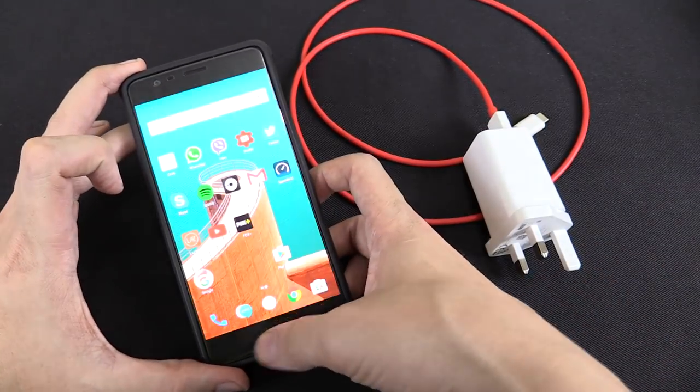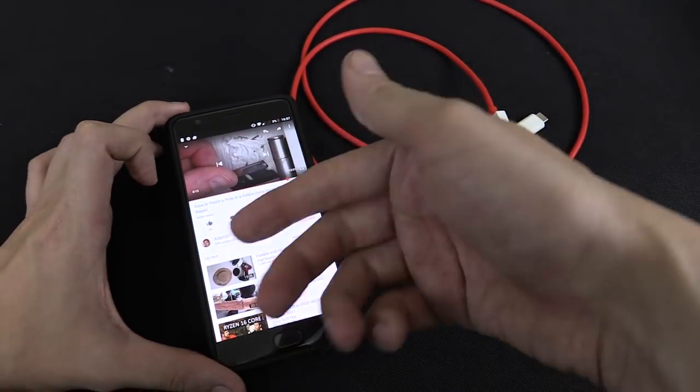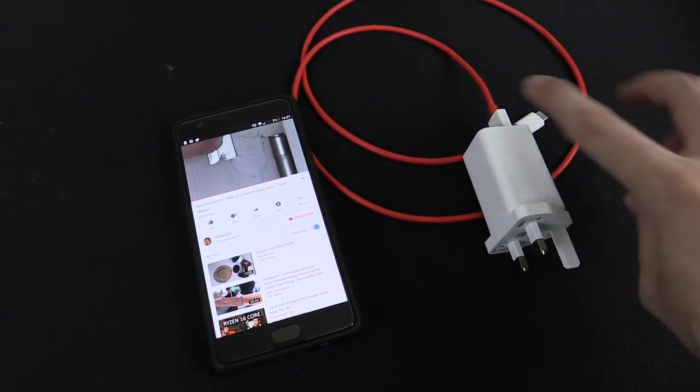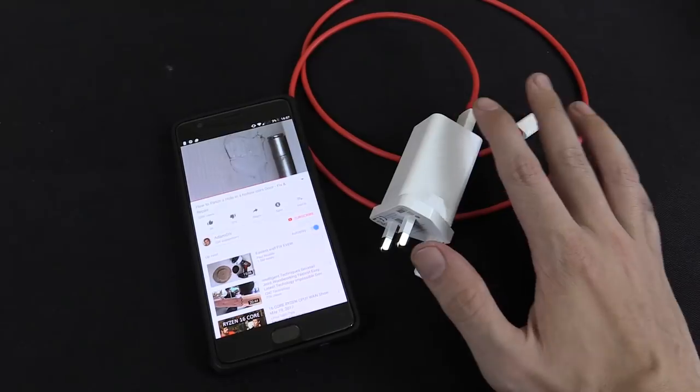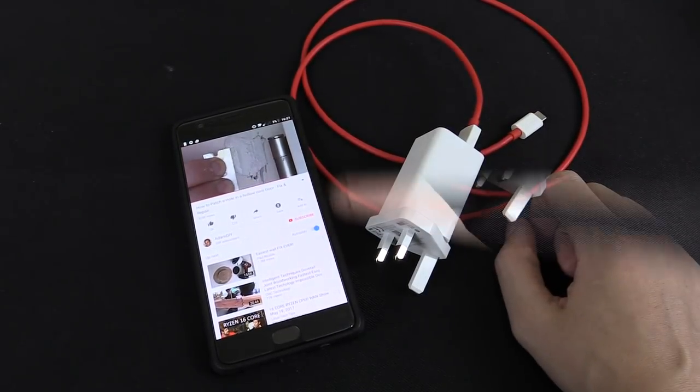So right now what I'm doing is running the battery down. You can see we're at 3% and I'm going to continue watching YouTube just to run it down. And then once it gets to 0% and turns off, we're plugging the charger in and see how much power we can actually get in just 30 minutes.